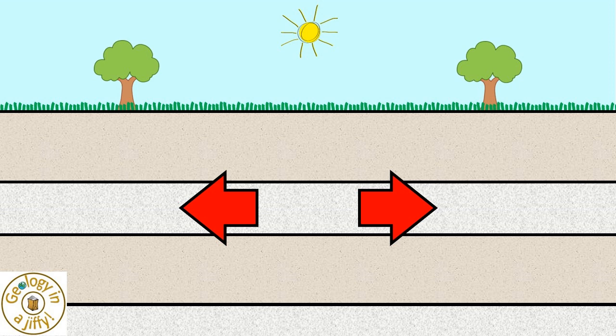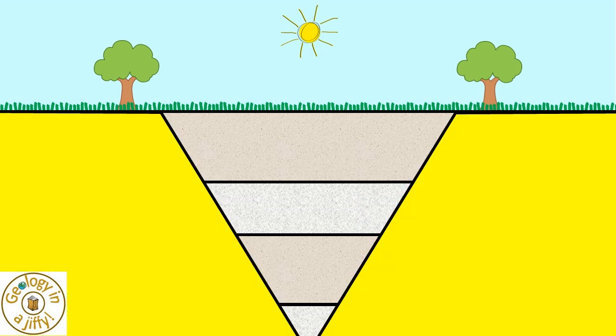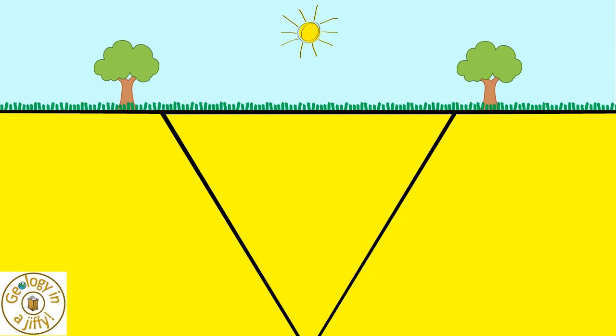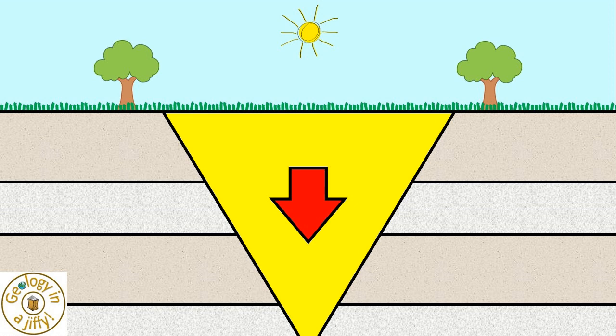Instead, as the crust is stretched, two parallel weak zones appear, bounding these two blocks of rock and a central block of rock. As the two outer blocks are pulled apart, the central block drops downwards.